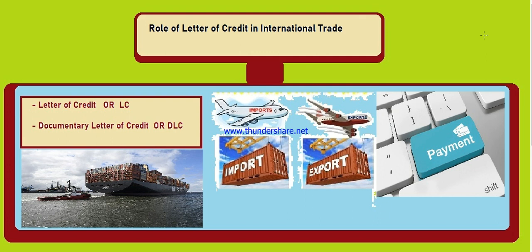After that, the exporter presents these documents along with the original letter of credit to their bank. The exporter's bank examines the documents, and if the documents are okay, the exporter's bank forwards them to the importer's bank — the LC opening bank — for payment. The LC opening bank once again examines the documents, and if they are okay, the LC opening bank is bound to make payment within five banking days to the exporter's bank.